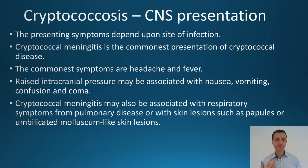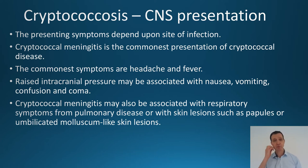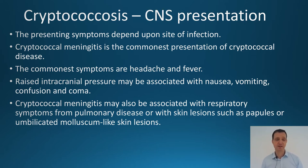After a lung infection, Cryptococcus goes to the blood and then to the brain, which is what we're concentrating on because that causes the most problems. In terms of brain infection, how does meningitis present? The commonest symptoms are headache and fever, usually with raised intracranial pressure, associated with nausea, vomiting, confusion, and coma — and if no treatment is given, that leads to death.